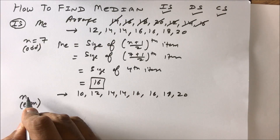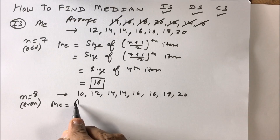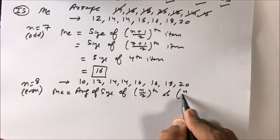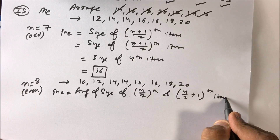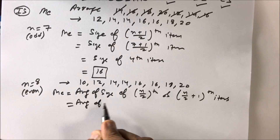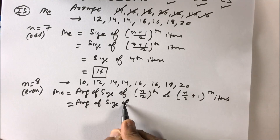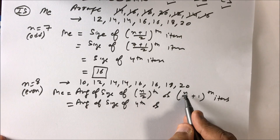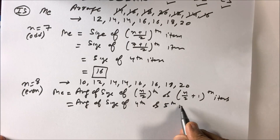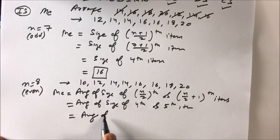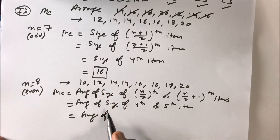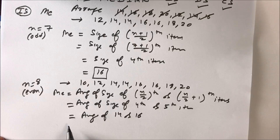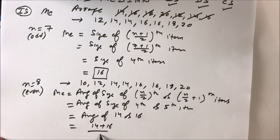Now counting gives n = 8, which is even. The formula for even n is the average of the (n/2)th and (n/2 + 1)th items. So we need the average of the 4th and 5th items. The 4th item is 14 and the 5th item is 16. The average is (14 + 16) / 2 = 15.